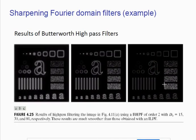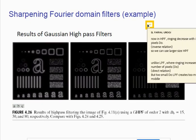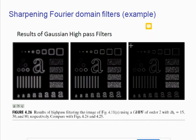In the case of high pass filtering, ringing decreases with an increase in cutoff frequency — this is an inverse relationship. We can therefore use a larger size of high pass filter because larger sizes give better edge enhancement. This is unlike a low pass filter, where ringing increased directly with cutoff frequency. With a low pass filter, too small a cutoff frequency used to create extreme blurring, so we kept it in the middle.